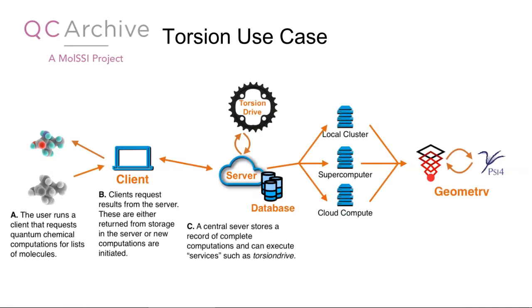TorsionDrive is in fact a service that makes very small, CPU-lightweight decisions about what should happen. It says: should we start a new wavefront propagation? Are we complete? How many more computations do we need? Usually torsion drive says it needs 50 or 60 geometry optimizations — go distribute these across not only one local cluster but many local clusters with many nodes. This way we aggregate multiple clusters together from multiple PIs, or interested power users who'd like to contribute to the project.